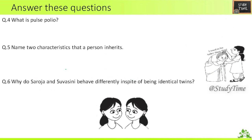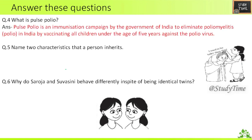Fourth — what is Pulse Polio? Pulse Polio is an immunization campaign by the Government of India to eliminate polio in India by vaccinating all children under the age of five years against the polio virus.